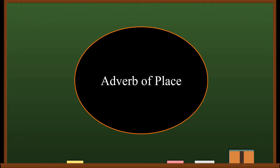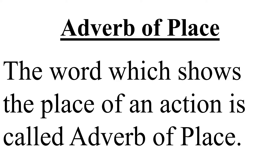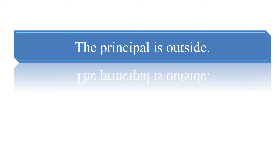Adverb of Place. The word which shows the place of an action is called Adverb of Place. Jis Adverb se hume ye pata chalta hai ki action kahan huwa tha, usay ham kehte hain Adverb of Place. For example: the principle is outside. Here the word 'outside' shows the place where the action is done, so 'outside' is Adverb of Place.